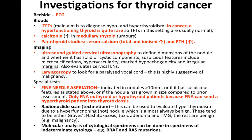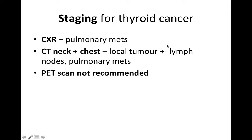The radionuclide scan evaluates the degree of nodule functioning. A hyperfunctioning 'hot' nodule is almost always benign — typically Graves' disease, Hashitoxicosis, toxic adenoma, or toxic multinodular goitre. Cold nodules could potentially be malignant. For staging, a chest X-ray looks for pulmonary metastases, and a CT of the neck and chest assesses local tumour, lymph nodes, and pulmonary metastases. A PET scan is generally not recommended.